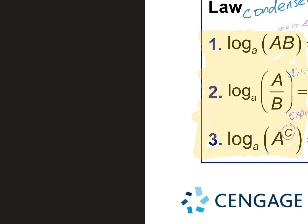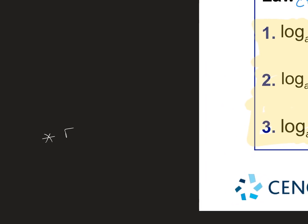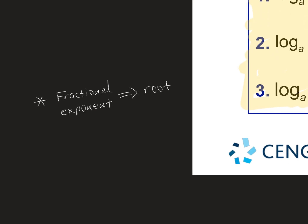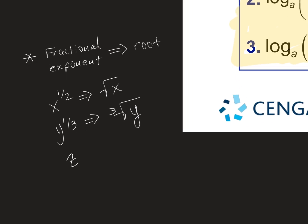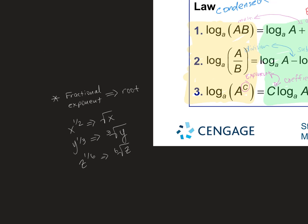Something important to bring to your attention — a fractional exponent means an exponent that's not a whole number. A fractional exponent is the same as a root. If I have x to the one-half power, that's the square root of x. If I have y to the one-third, that becomes the cube root of y. If I have z to the one-sixth, that becomes the sixth root of z. Fractional exponents become roots; if you have a root, it becomes a fractional exponent.